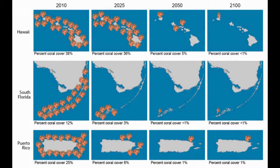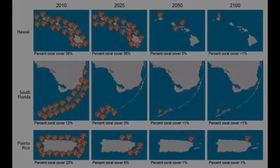Bleaching is believed to have killed as much as half of the world's coral reef, and is projected to cause up to 90% loss within the next century.